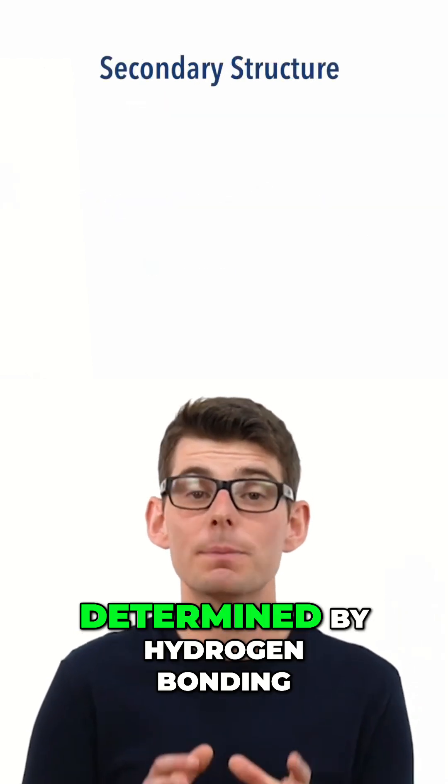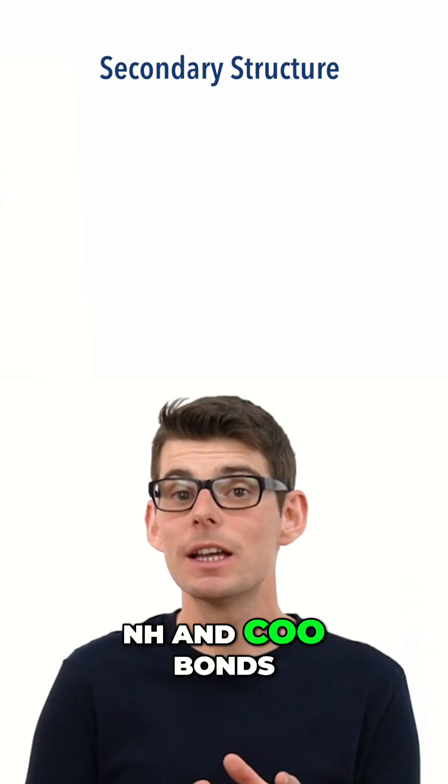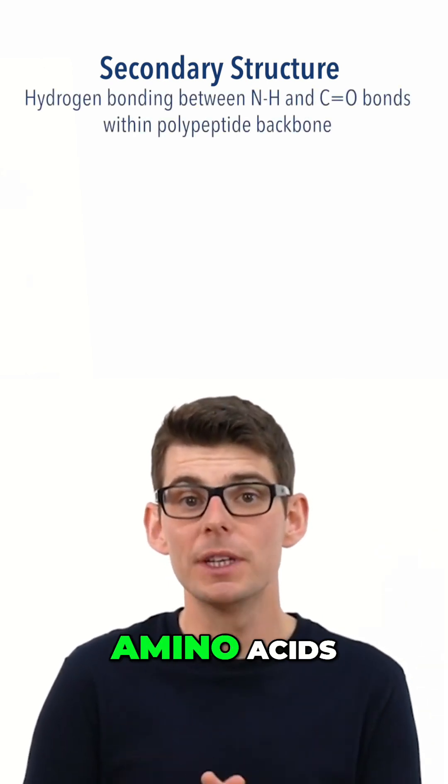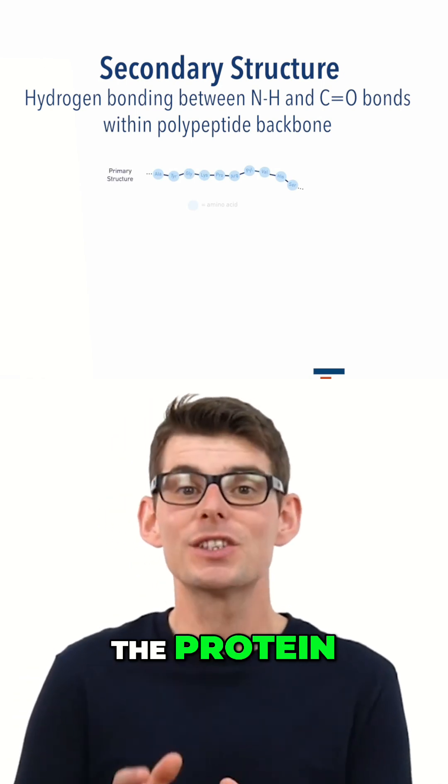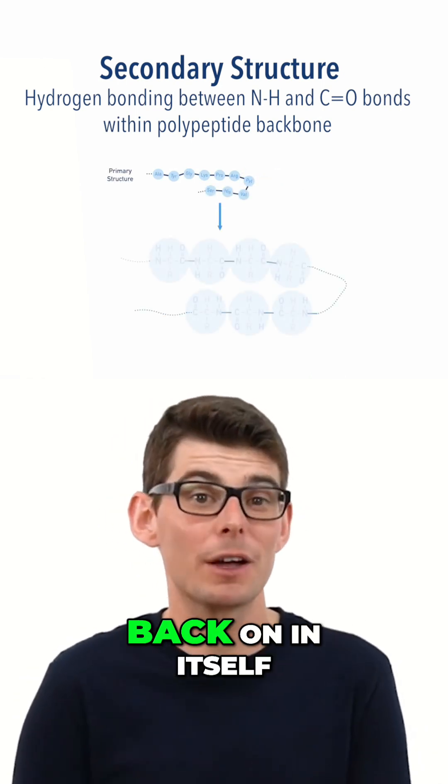The secondary structure is determined by hydrogen bonding that can form between NH and COO bonds from different peptide links, as the chain of amino acids, the primary structure of the protein, starts to fold, a bit like a piece of string collapsing back on itself.